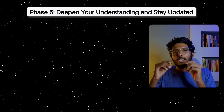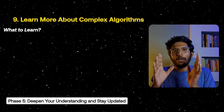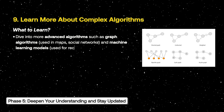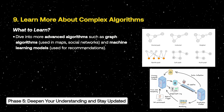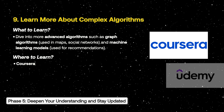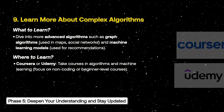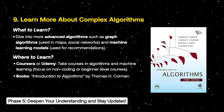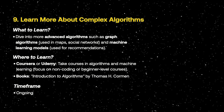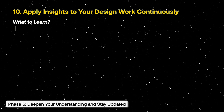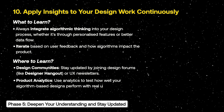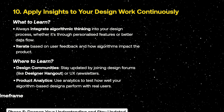The last phase is phase 5. The first part: start learning complex algorithms like graph algorithms and machine learning models. Take courses and read books — like the book by Thomas H. Cormen, which is advanced but good for understanding complex algorithms. The second part: apply algorithmic thinking continuously in your work. Apply it in the community and in real life. Analyze your own products and integrate algorithmic thinking. This is the algorithmic roadmap.